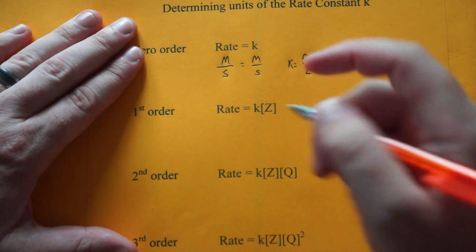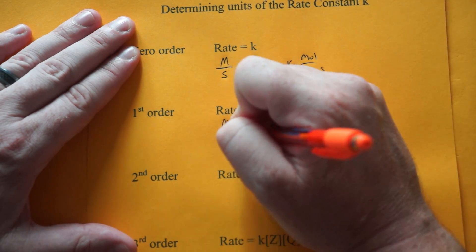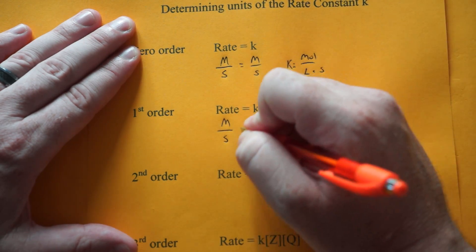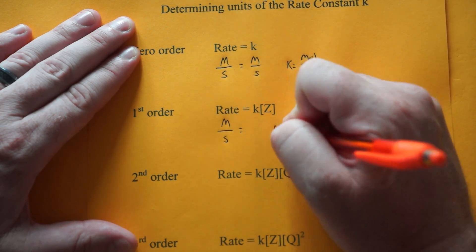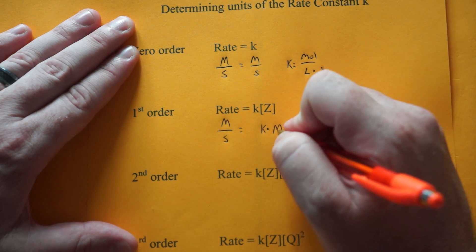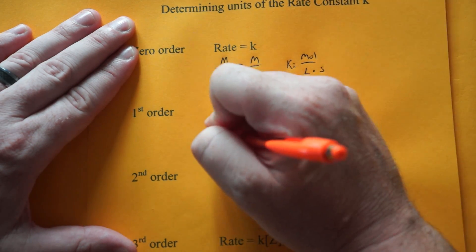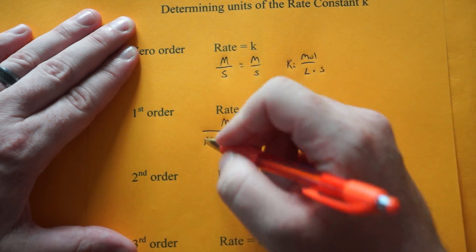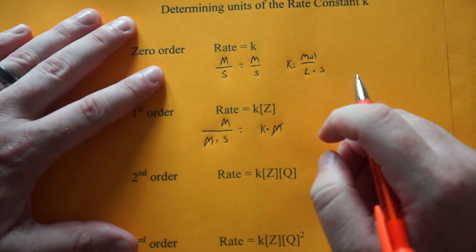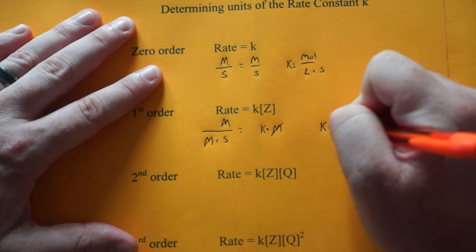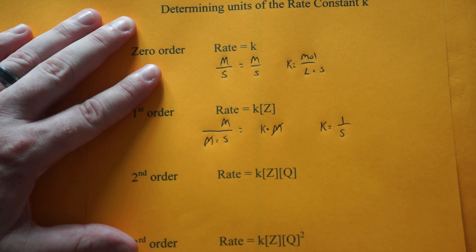Now when it comes to first order, it's still molarity per second, but now we have a molarity unit over here. So k times molarity units. So what we're going to do is we're just going to bring this over the other side in the denominator. What happens is you're just going to cancel out your molarities. So the units for k is 1 over seconds or 1 over time.